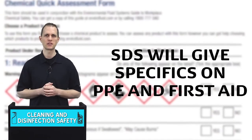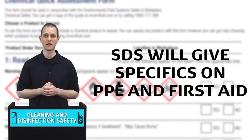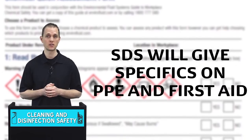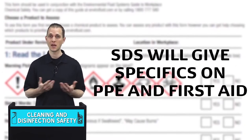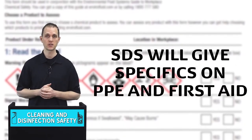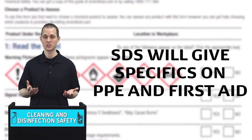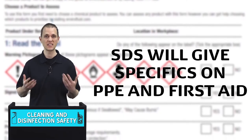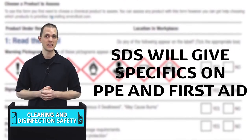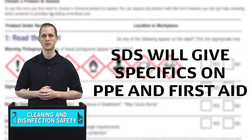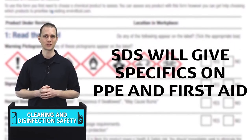The safety data sheets will give specifics on hazards associated with use and personal protective equipment that should be worn, in addition to any first aid steps that can be taken to help someone if they have an adverse reaction.